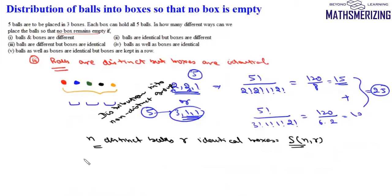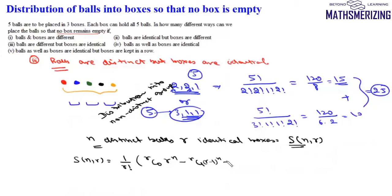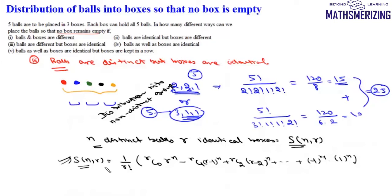Now how do we find S(N, R)? The formula for S(N, R) is: one over R! multiplied by the sum: C(R,0)·R^N − C(R,1)·(R−1)^N + C(R,2)·(R−2)^N, continuing until the last term which is (−1)^(R−1)·1^N. Using this formula we can find the Stirling number S(N, R), which equals the number of ways to distribute N distinct balls into R identical boxes.